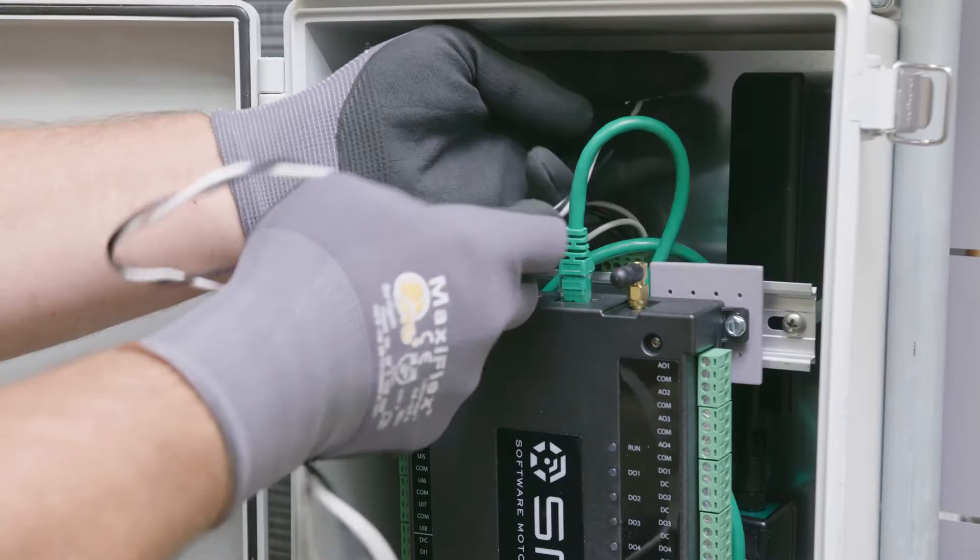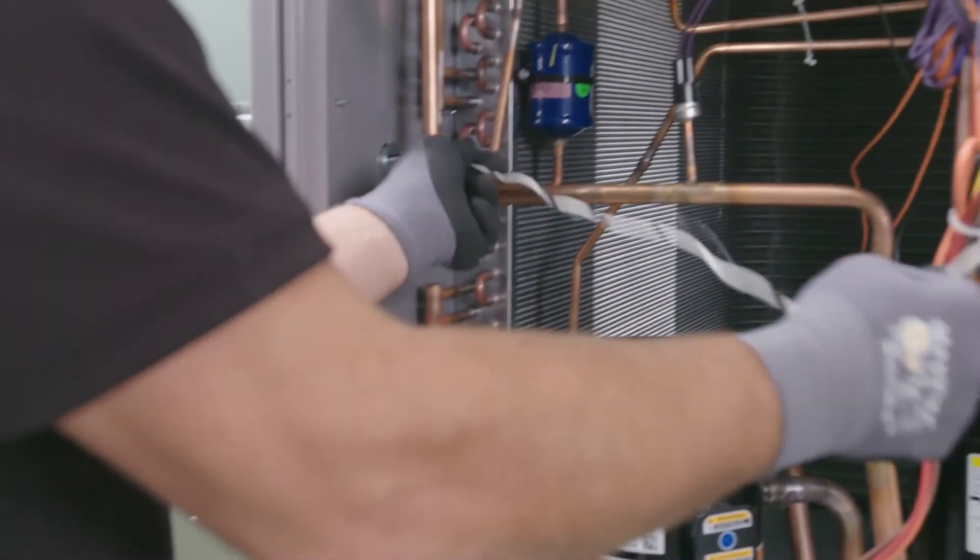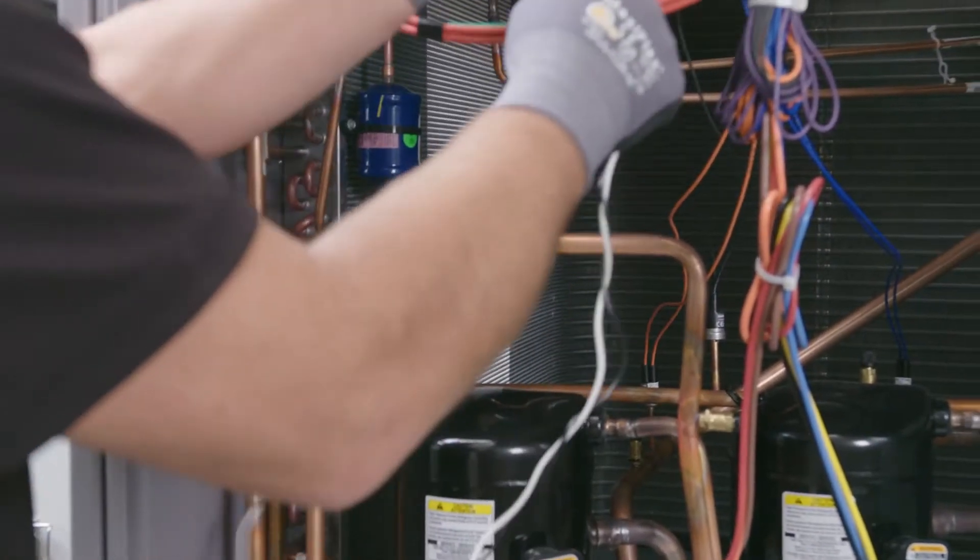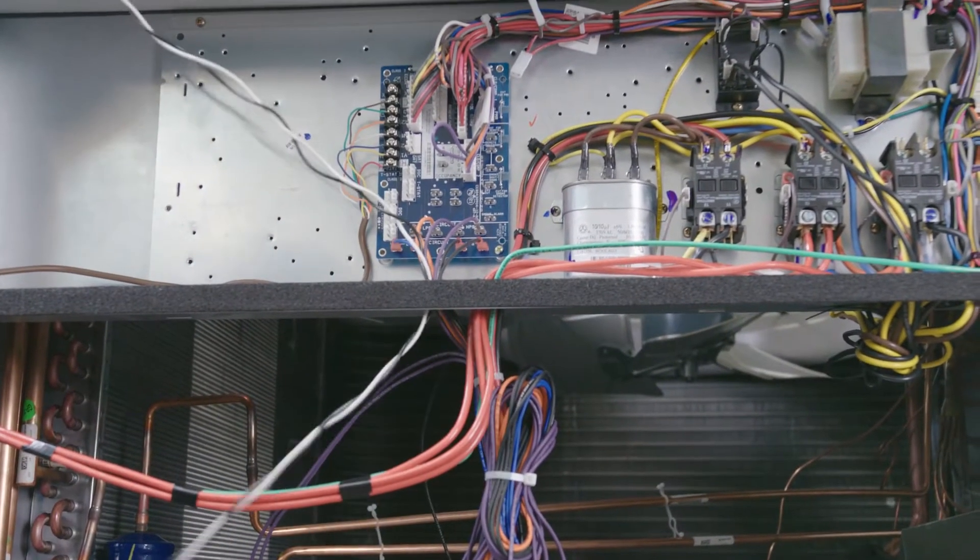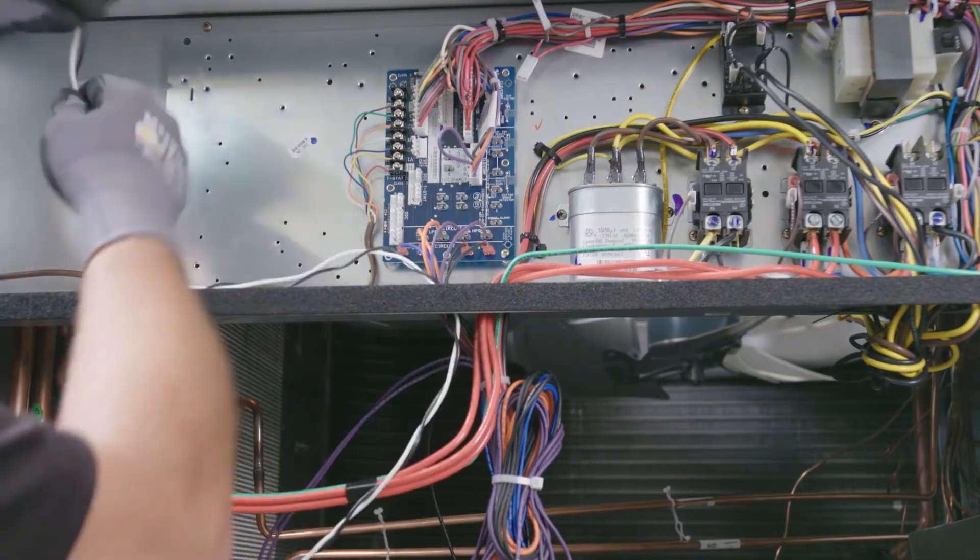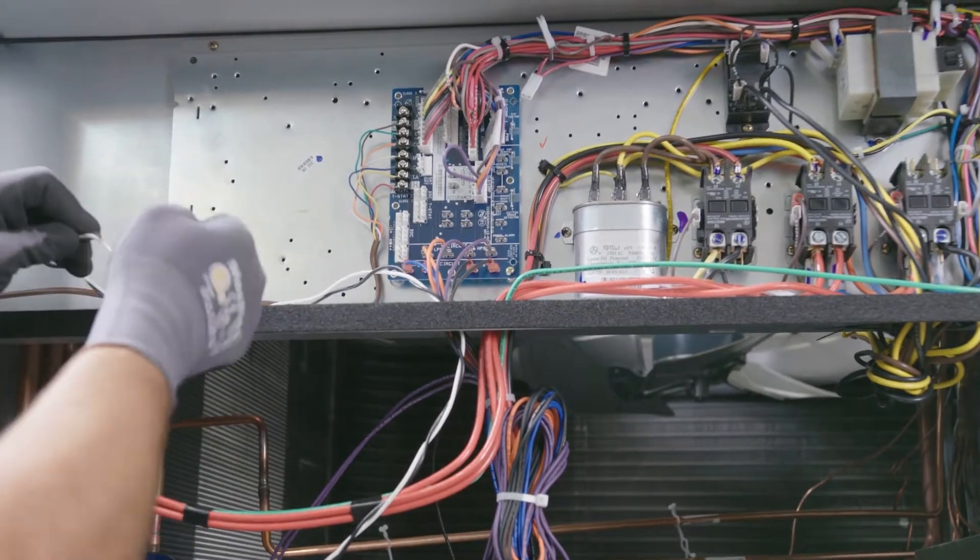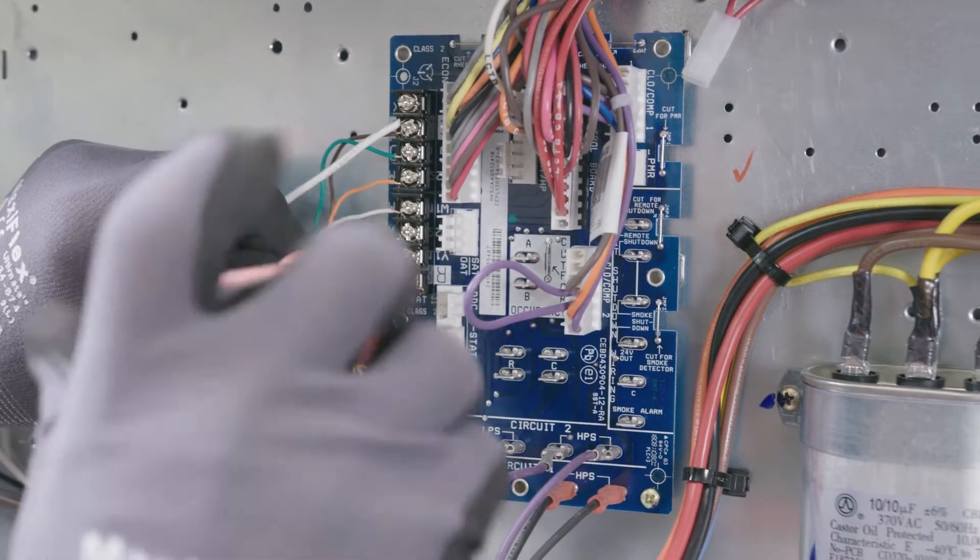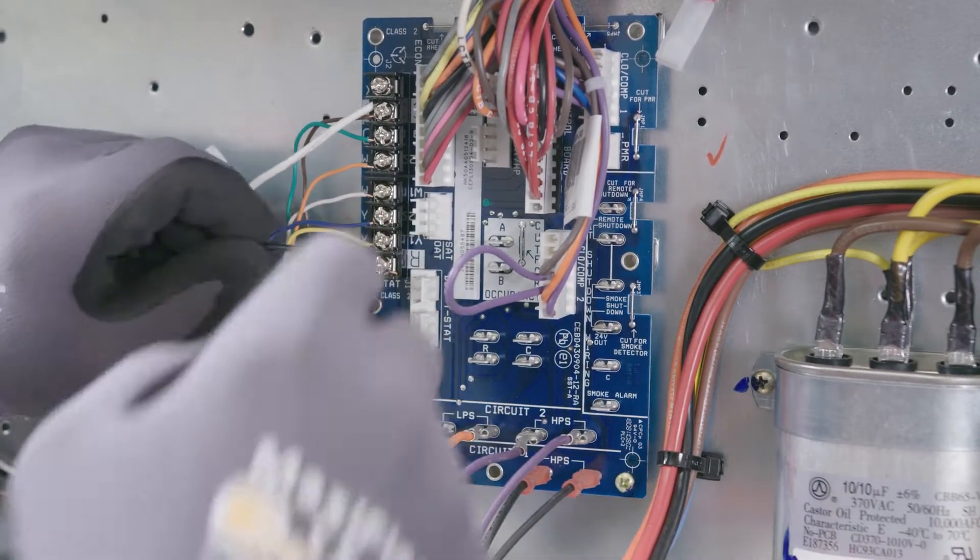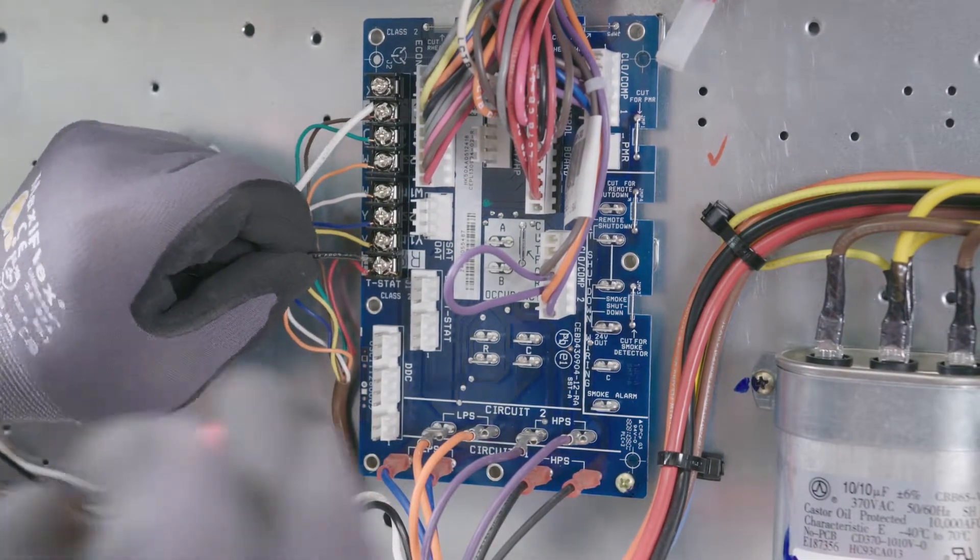Now that you've got the panel mounted, you want to pull out the black and white wires, which is the 24-volt power supply to the SMC panel. Simply run the black and white wires to the unit transformer or to the terminal block on the unit. Once you've run the 24-volt power supply for the weatherproof enclosure panel to the unit, simply terminate it on the C and the R terminals to power up the panel.